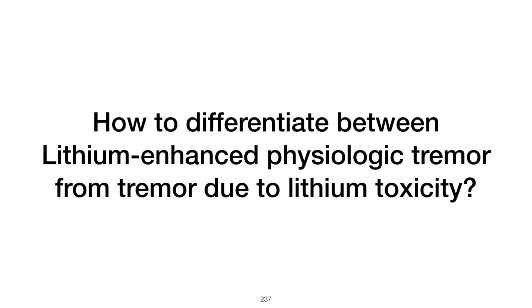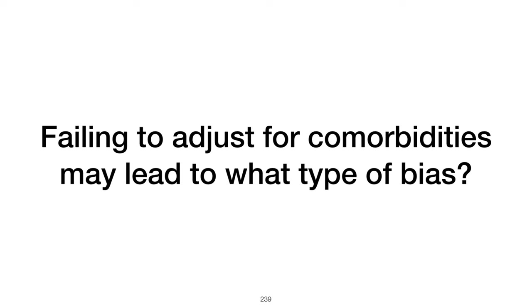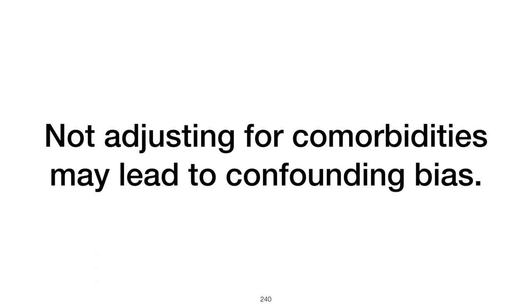How to differentiate between lithium-enhanced physiologic tremor and tremor due to lithium toxicity? Lithium toxicity typically causes an irregular, coarse tremor involving multiple parts of the body, accompanied by gastrointestinal or additional neurologic symptoms, unlike enhanced physiologic tremor caused by lithium, which is symmetric and limited to the hands and does not accompany systemic symptoms. Failing to adjust for comorbidities may lead to confounding bias, where an external variable influences both the independent and dependent variables, potentially misleading the study's findings.